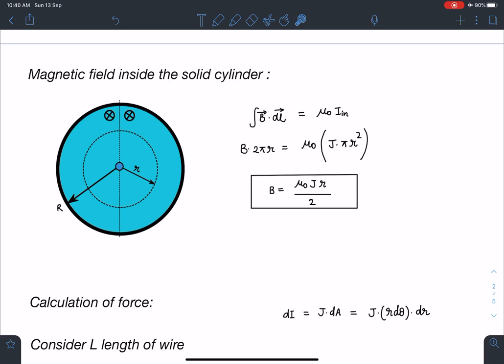So B dot dl, this value is going to be μ₀ times current through radius of r in this cross section. How much current is flowing, that we have to calculate. So B dot dl will become B into 2πr. μ₀ times current inside. I can simply write current per unit area multiplied by area of this cross section.